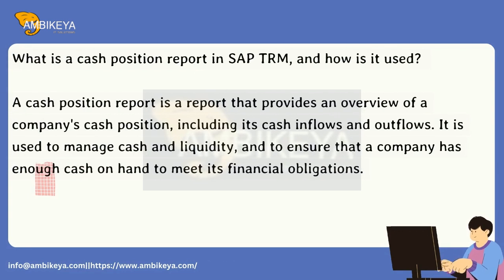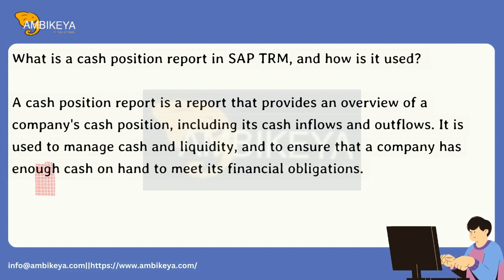What is a cash position report in SAP TRM, and how is it used? A cash position report is a report that provides an overview of a company's cash position, including its cash inflows and outflows. It is used to manage cash and liquidity, and to ensure that a company has enough cash on hand to meet its financial obligations.